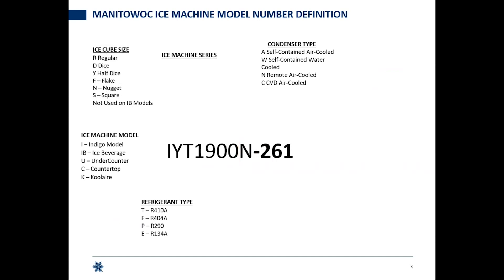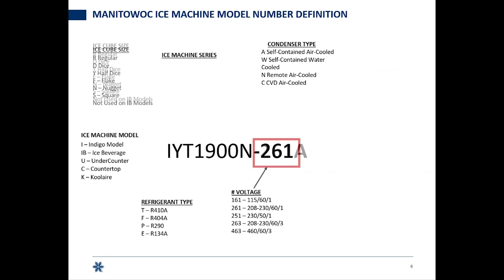Then we're going to call out our electrical type, the voltage. This is a dash 261, letting us know that the machine is a 208 to 230 volt, 60 hertz, single-phase ice machine.